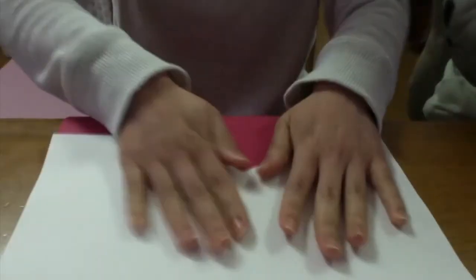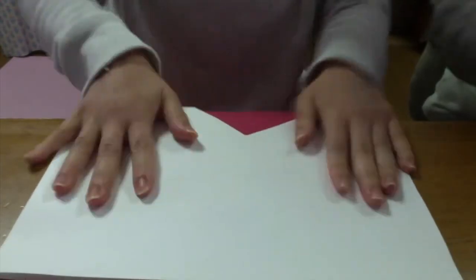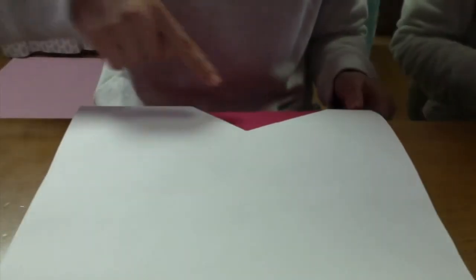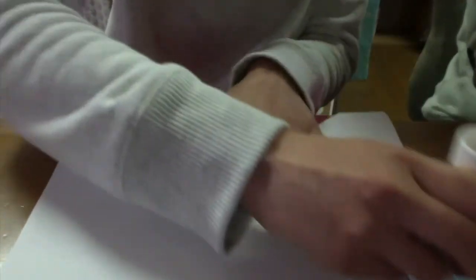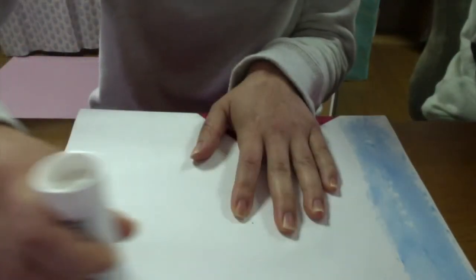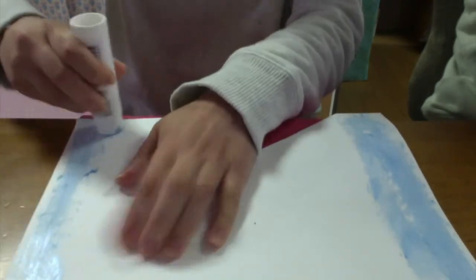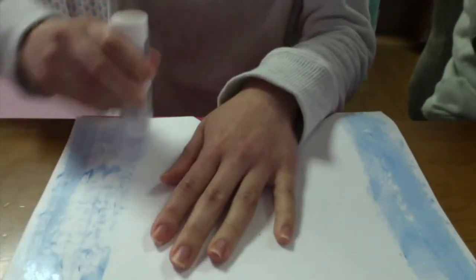Fold your shark in half. And now glue this side. Remember to be generous with the glue. And hold the page down so that you don't wrinkle it.